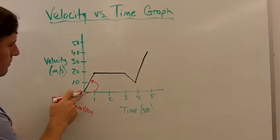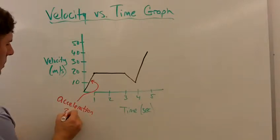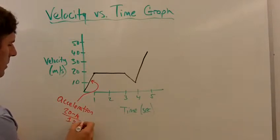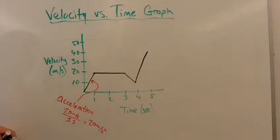Well, it starts at zero and it gets to 20 meters per second over the course of one second, so that should be 20 meters per second divided by one second, gives us 20 meters per second squared. Right, so that's the acceleration of this object during that period of time over that first second.